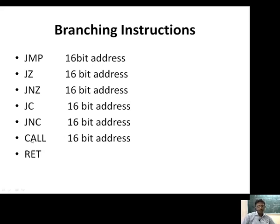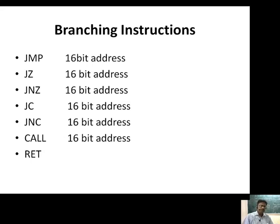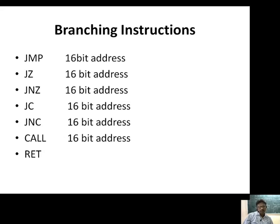The next branching instruction is the CALL instruction, used whenever we are using subroutines or subprograms. A subroutine is a kind of program. Whenever certain lines are repeated in a main program, instead of repeating them many times, we write that set of instructions separately at a certain place in memory — that is the subprogram. The main program then calls it using the CALL instruction. The format is CALL followed by a 16-bit address, which calls the subprogram written at that address.